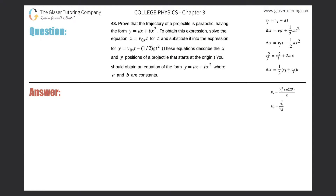Number 48. Prove that the trajectory of a projectile is parabolic, having the form y equals ax plus bx squared.